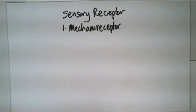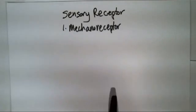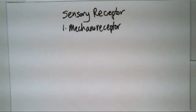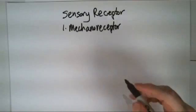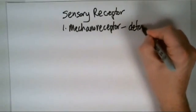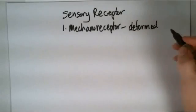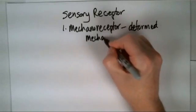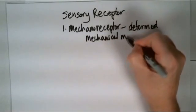Mechanoreceptor generates a nerve impulse when the actual receptor or the tissues around it are deformed by some type of mechanical force. Like I touch a particular piece of skin, that's going to deform the skin, it's going to stretch, it's going to put pressure on that skin, and that's going to cause these sensors to send a signal to the central nervous system.